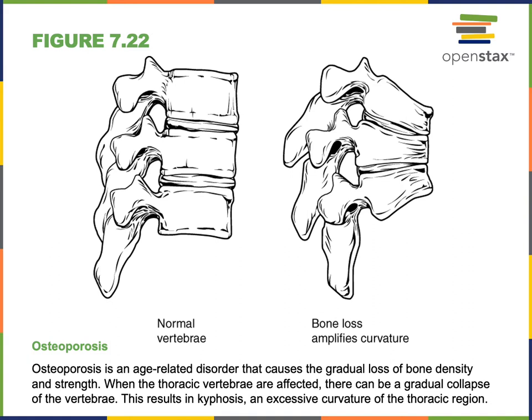Osteoporosis is the reduction in bone mass that results in a decreased bone density, producing bones that are light and fragile and more prone to fracturing. Osteoporosis occurs when osteoclast activity that breaks down the matrix of bone to release calcium occurs at a higher rate than osteoblast activity that deposits calcium in the bone to strengthen it, leading to bones that are fragile and light.